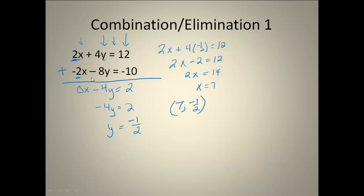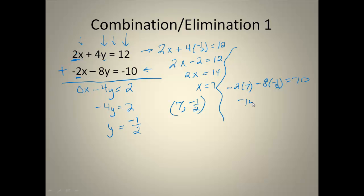I do need to check this though. Since I used the top equation to find my 7, I'm going to plug my solution into the bottom equation and see if it works. So I would have negative 2 times 7, minus 8 times negative one half, and hopefully that will equal negative 10. I end up with negative 14 plus 4, and I get negative 10 equals negative 10. So it does work. So (7, negative one half) is my solution — that ordered pair.